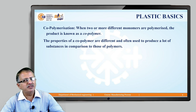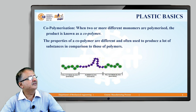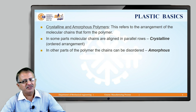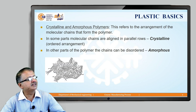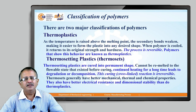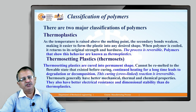Copolymerization is when two or more different monomers are joined together; the resulting material is called a copolymer. Since different monomers are used, the properties of copolymers are different from those of homopolymers. The arrangement of molecules is also shown: one arrangement is an ordered arrangement and another is a disordered arrangement. If molecular chains are aligned in parallel rows, this is called a crystalline or ordered arrangement. If the chains are in a disordered state, this has implications for the resulting properties and applications of the material.